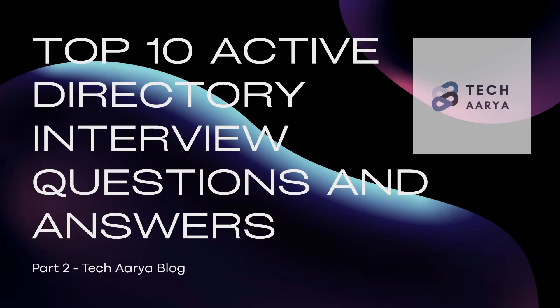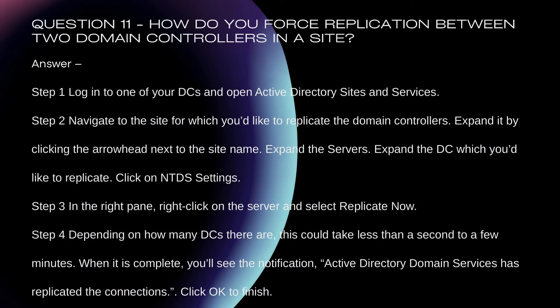Question 11: How do you force replication between two domain controllers in a site? Step 1: Login to one of your DCs and open Active Directory Sites and Services. Step 2: Navigate to the site for which you'd like to replicate the domain controllers.